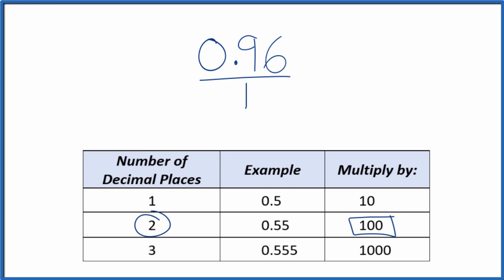So 100 times 0.96, that equals 96. And that's our whole number. But we can't just multiply the numerator by 100. We also need to multiply the denominator by 100. That's because 100 over 100 equals 1. So we're just multiplying by 1. We don't change the value, just the way it's written. So 100 times 1, that equals 100.